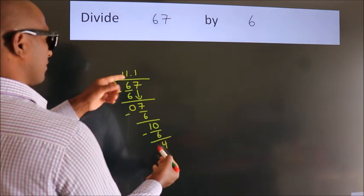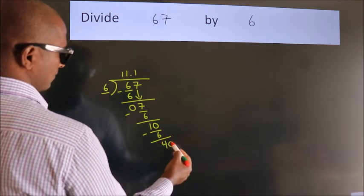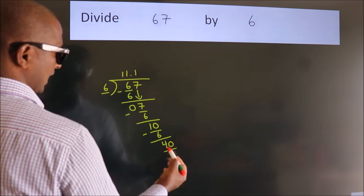After this, we already have the decimal, so directly take 0. So, 40.